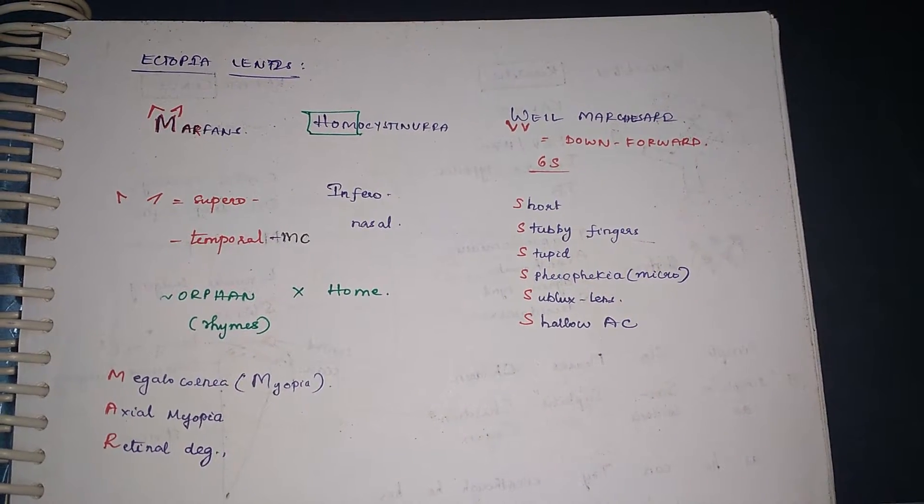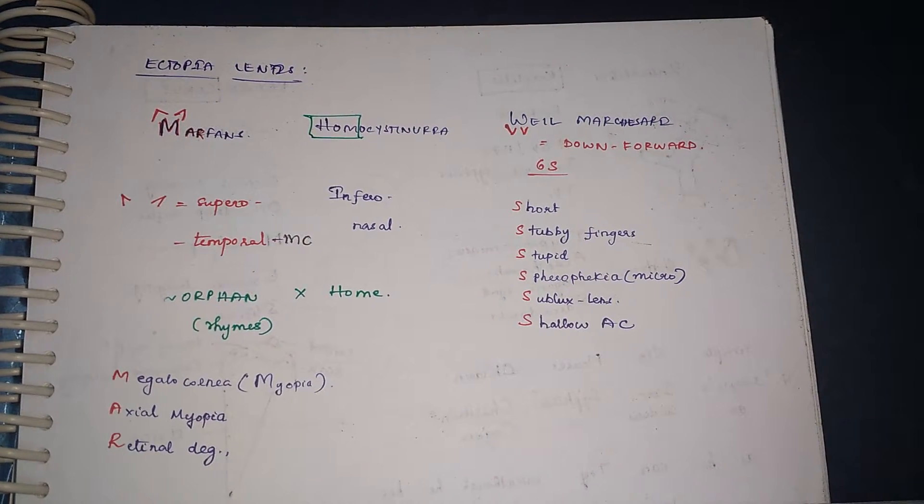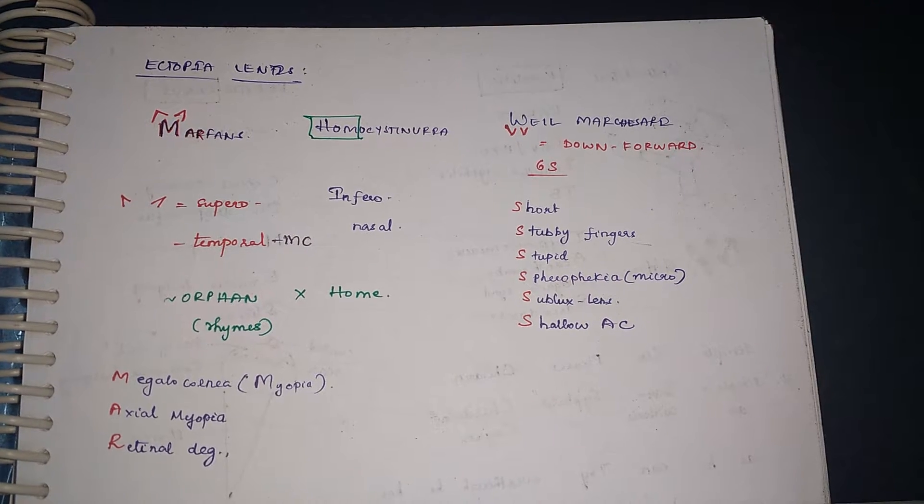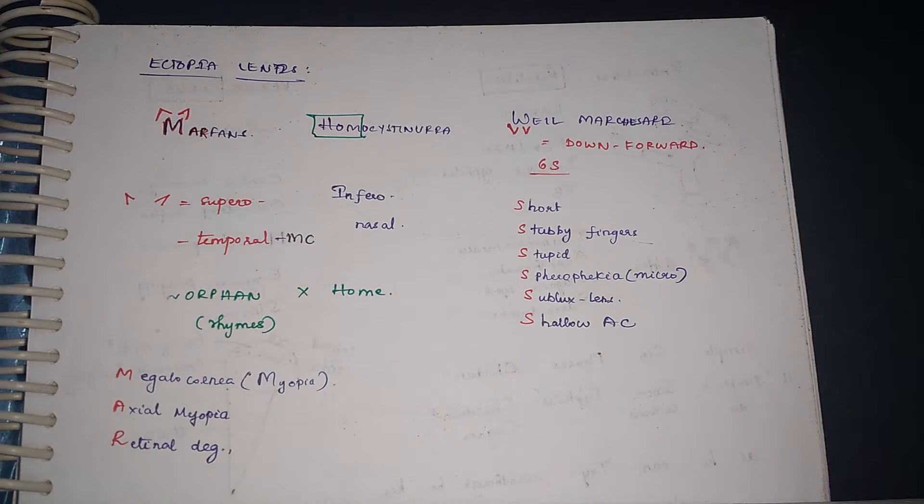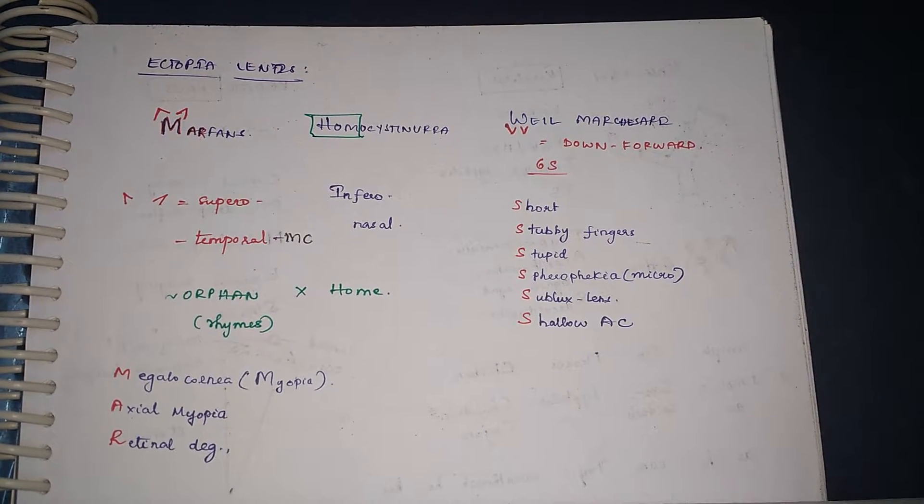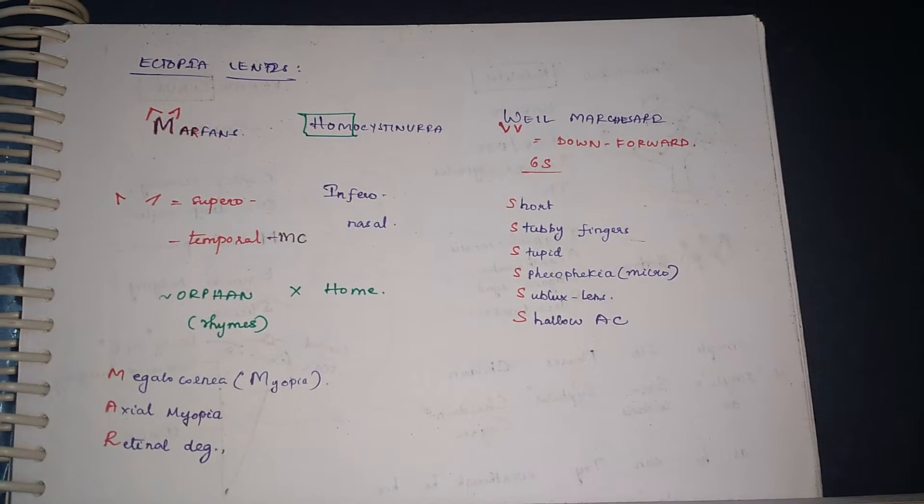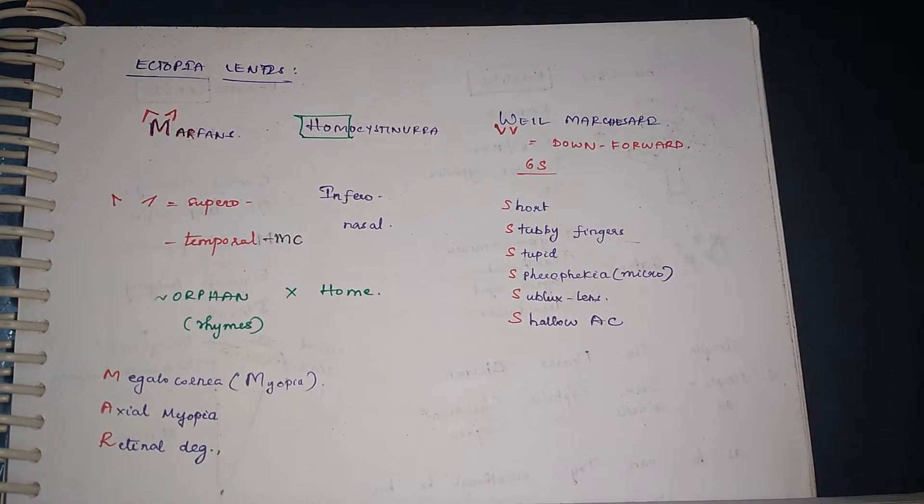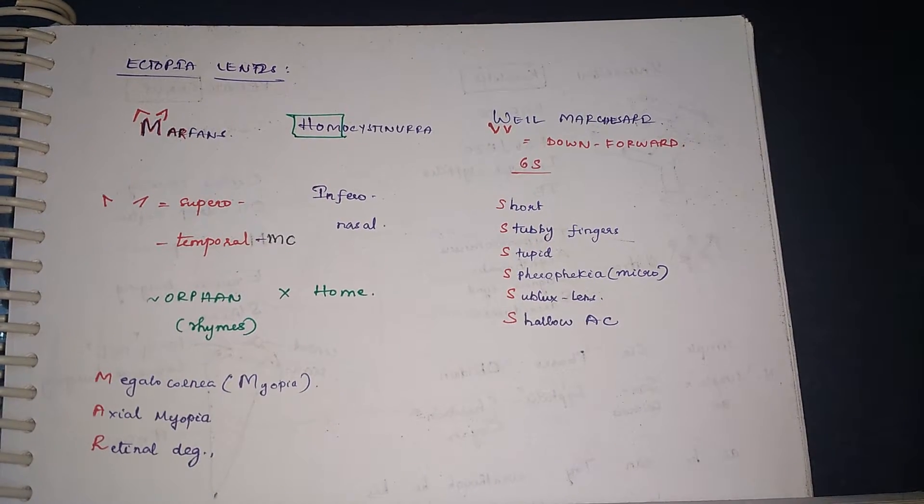Which gives us the direction of the ectopic lens, that is superior temporal, which is the most common feature of Marfan's in the list of ophthalmological features. And the other eye features of Marfan's can be remembered by the first letters: Megalocornea,